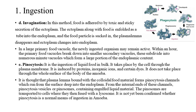D. Invagination: In this method, food is adhered to by toxic and sticky secretion of the ectoplasm. The ectoplasm along with food is enfolded as a tube into the endoplasm, and the food particle is sucked in; the plasmalemma disappears and ectoplasm changes into endoplasm. In a large primary food vacuole, the newly ingested organism may remain active.